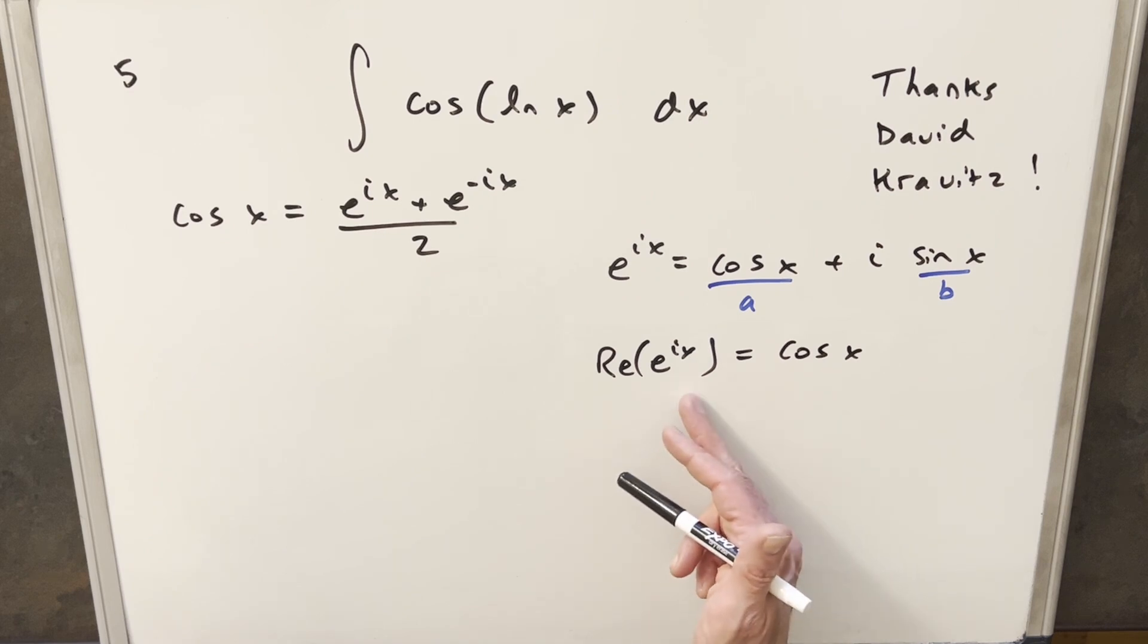But that's what we want, just a complex way to rewrite cosine, not dealing with the ln x yet. So we can use this, for cosine x we can express this as the real part of e to the ix.